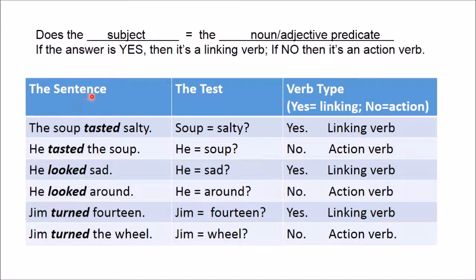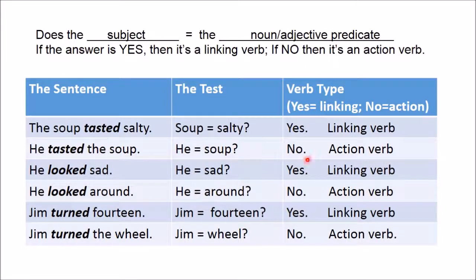Let's run some examples through the test. 'The soup tasted salty' — the verb is 'tasted.' Does soup equal salty? Yes, so 'tasted' is a linking verb. Now, 'he tasted the soup' — does he equal soup? No, that's not what the sentence is saying. So in that case, 'tasted' is an action verb.